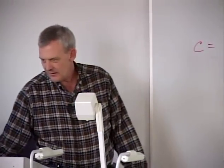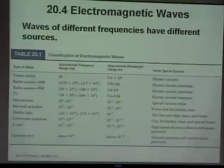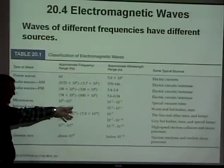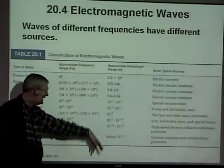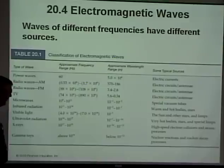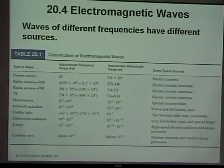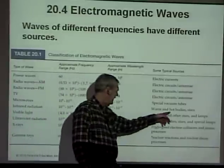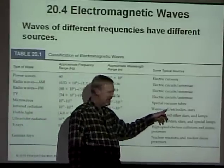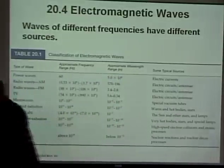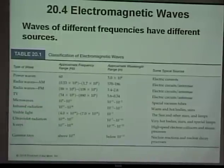Here's the chart showing both frequency and wavelength together — warm and hot bodies emit radiation across the spectrum.